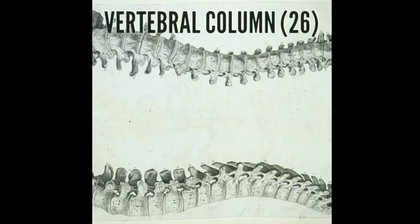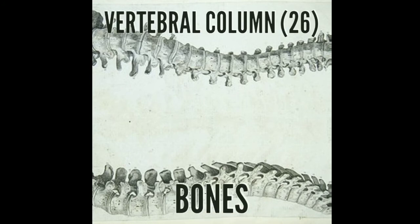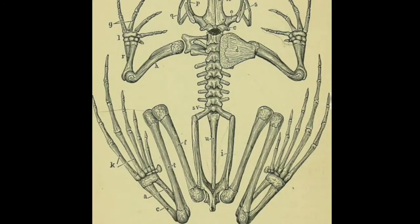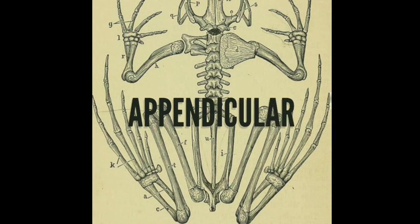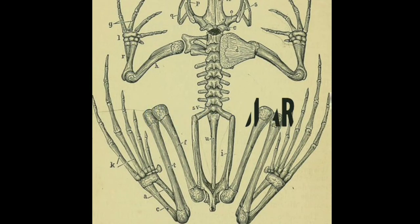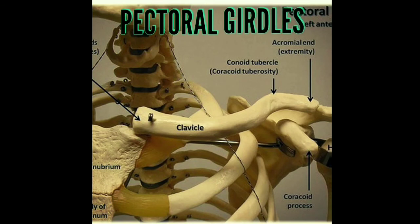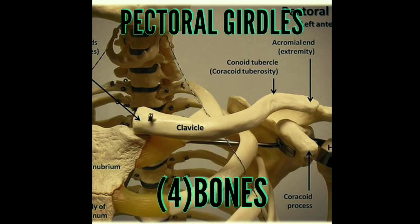The vertebral column consists of 26 bones and the ribcage 25 bones. The appendicular skeleton consists of pectoral girdles — 4 bones.